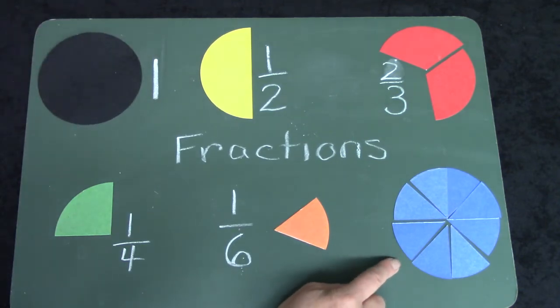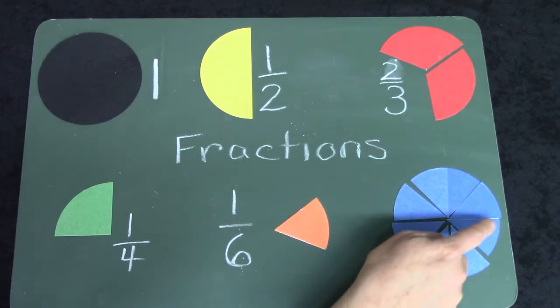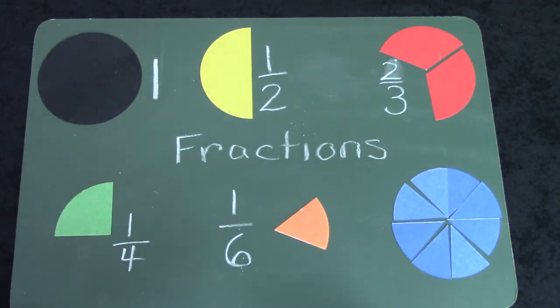All right, well let's take a look over here and count them with me. One, two, three, four, five, six, seven, eight. This circle is broken into eight pieces.